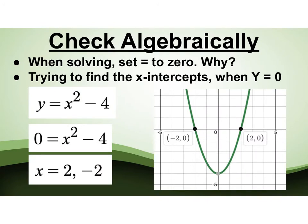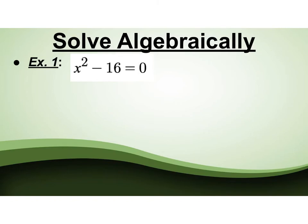When you're solving, you set it to equal to 0. How come? Because we're trying to find the x-intercepts, and when we have x-intercepts, it's the y that is 0. So here I graphed, here I have solved, and I have my answers of 2 and negative 2.